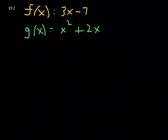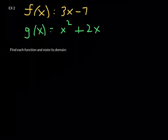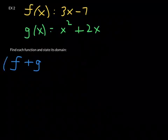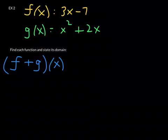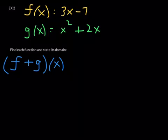Here are the instructions: find each function and state its domain. The first function we're going to find is the sum function, f plus g at x. Basically, I'm asking you to operate on these two given functions f and g. You know what f is — it's 3x minus 7. You know what g is — it's x squared plus 2x. So what do you get when you take those two functions and add them together?